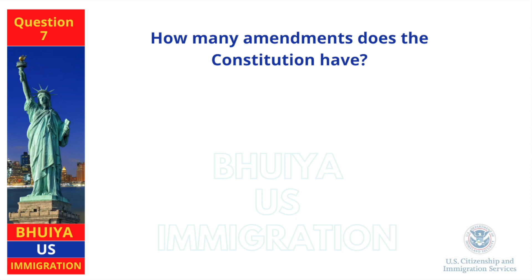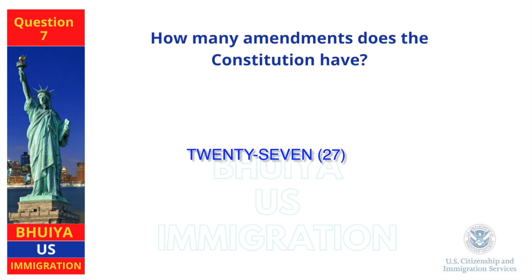How many amendments does the Constitution have? 27.